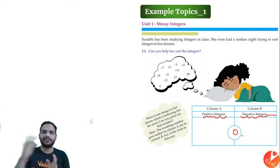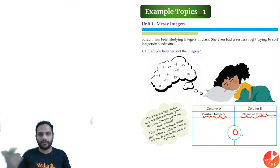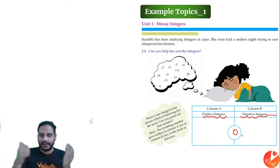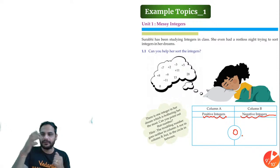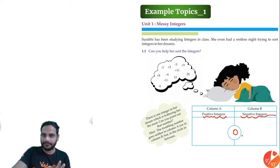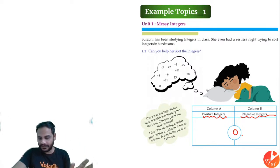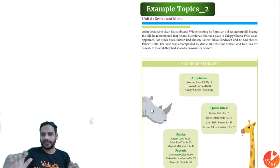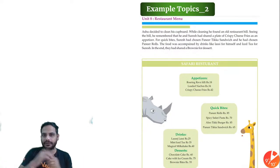The integer which goes in between Column A and Column B is zero, because zero is neither negative nor positive. With the help of such examples, they have tried to make students clear about the concepts - separating positive integers and negative integers.